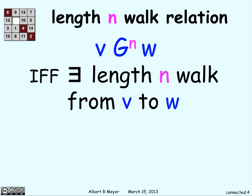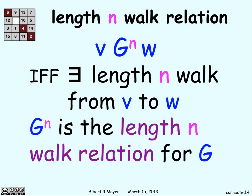Now we're going to talk about the length n walk relation. And what this means is with two vertices v and w, there is this g^n relation between v and w if there exists a length n walk from v to w. And g^n is called the length n walk relation for g. Basically, if you can find a way to go from v to w in exactly n steps, then g^n applies from v to w.